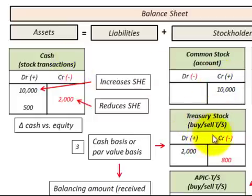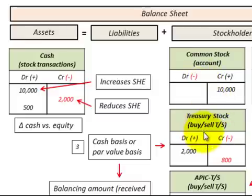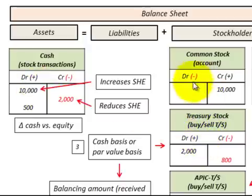That's a summary of Treasury stock and how it can be interchanged with our common stock — how we would buy and sell this Treasury stock and how it would affect both the cash and stockholders' equity.